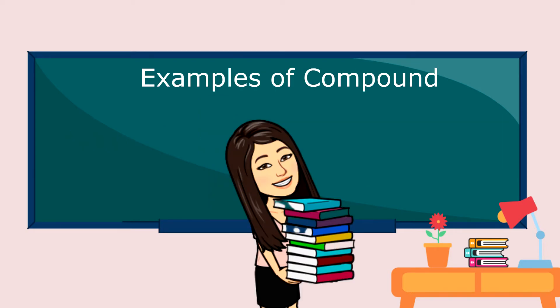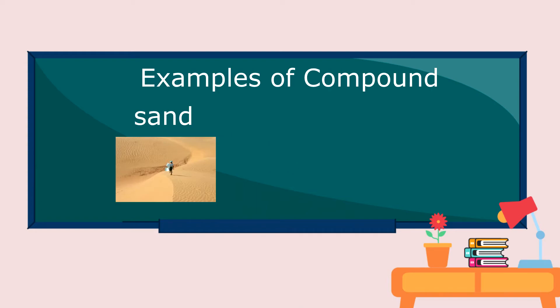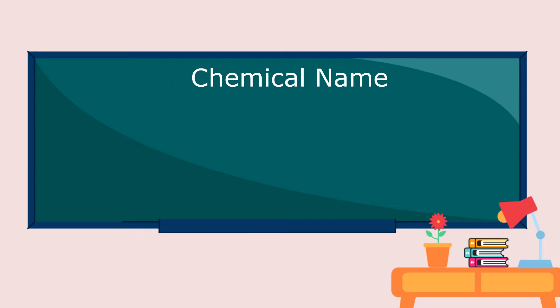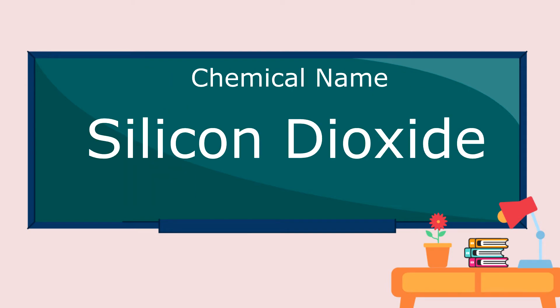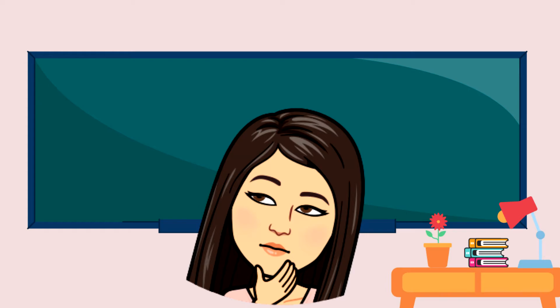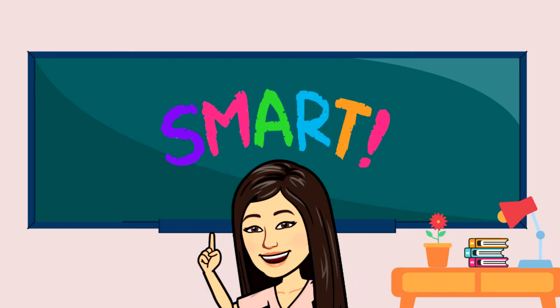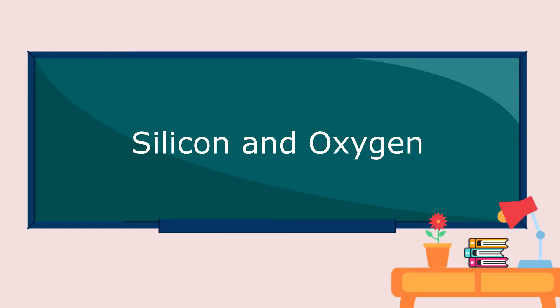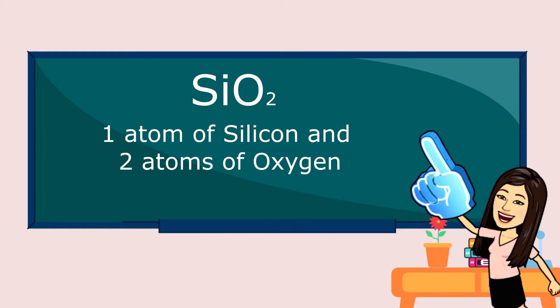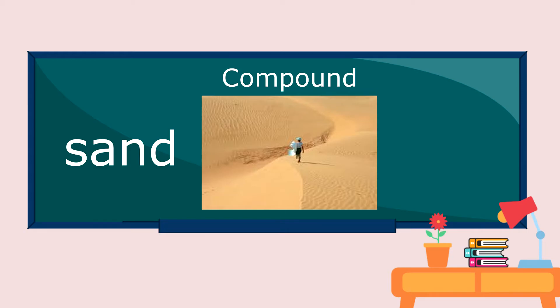Last example: sand. Chemical formula: SiO2. Chemical name: silicon dioxide. So what are the elements combined to form sand? Silicon and oxygen. We have one atom of silicon and two atoms of oxygen. So sand is a compound.